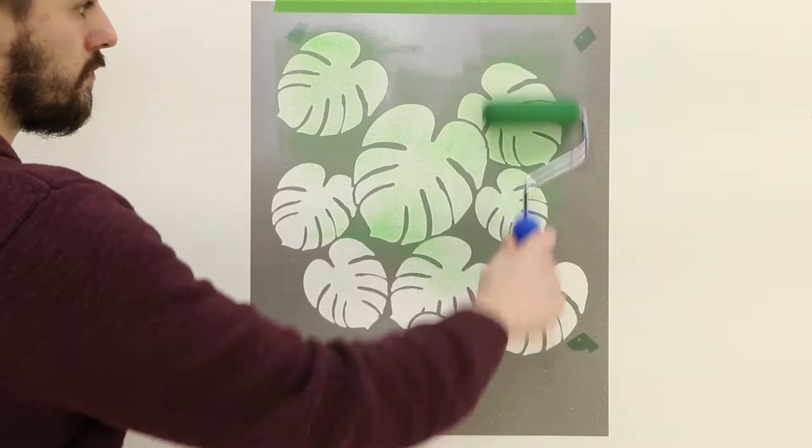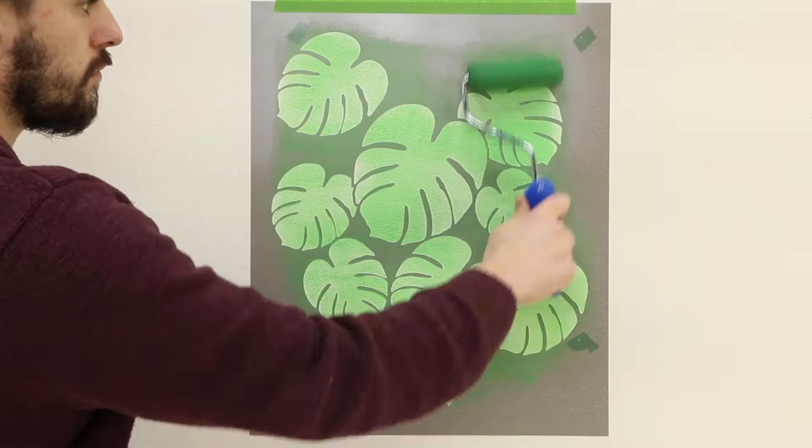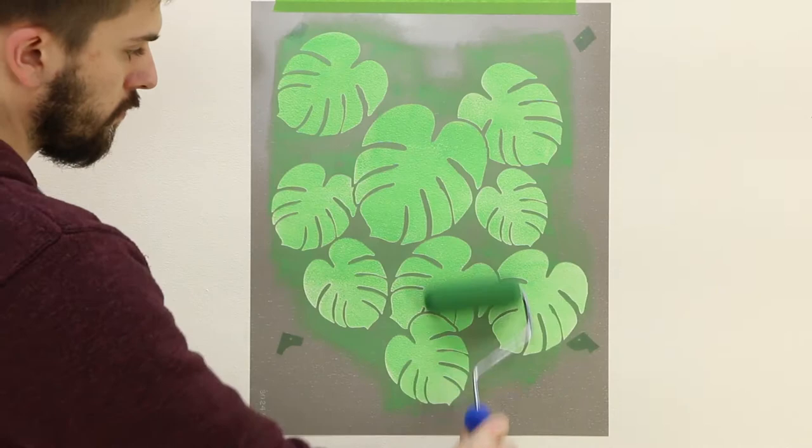Use the roller to lightly roll stencil paint through the design, using a delicate amount of pressure. As you roll additional layers of paint through the stencil, you will begin to build the color until you reach full coverage.